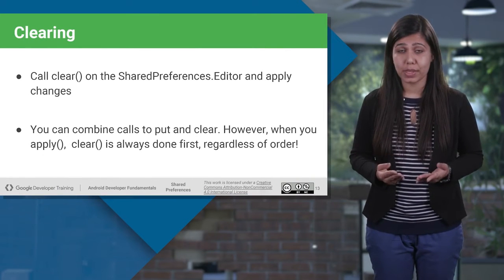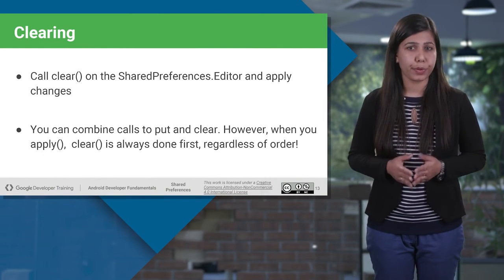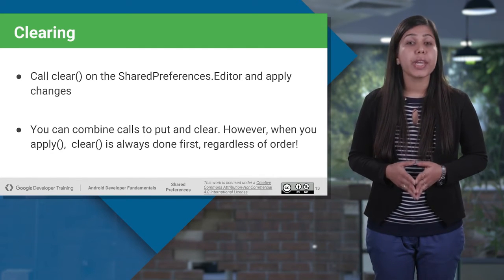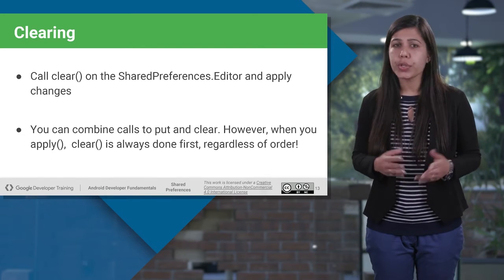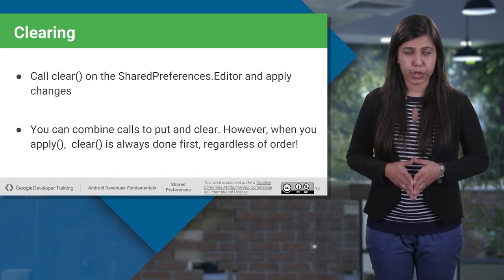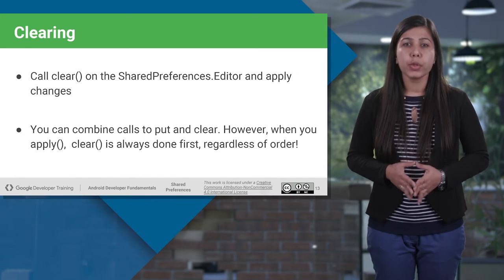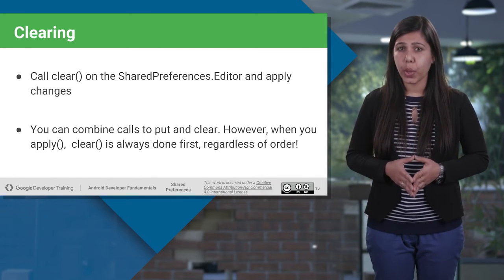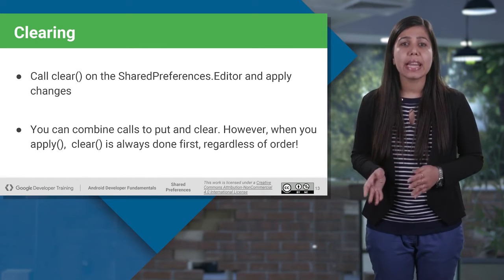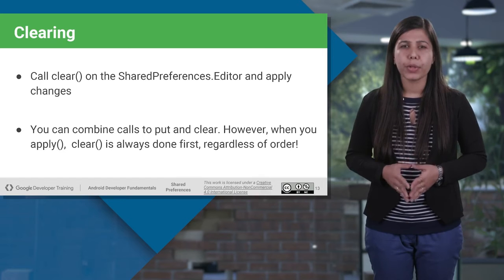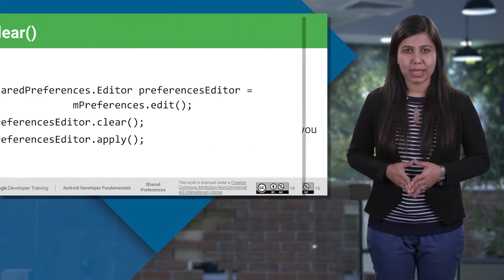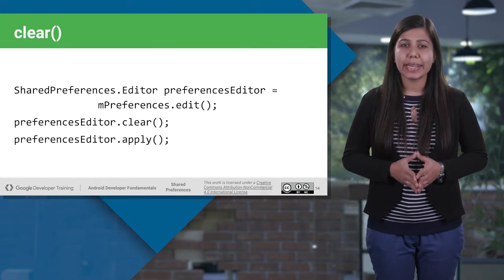If you want to give users the ability to clear any preferences you may have saved, it's easy to do. Once you get an instance of the editor, you just call clear on it. That will remove all the values from the preferences. You still need to call apply to apply the changes after you have cleared the preferences. Also, if you set any preferences and call clear together, clear will always be called first.